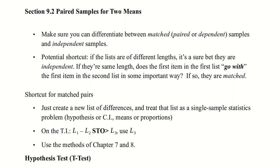There are some shortcuts here. First off, if the lists are of different lengths — if you've got a different number of one thing and another — they are in no way matched; they have to be independent. Now if they are the same length, you then have to ask the question: can you match, or is there an element that goes with each item of the first list with each of the second? So two things have to happen: exactly the same length, and if they are the same length, you have to be sure that they're matched in some way.